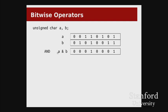The first bitwise operator is AND — single ampersand, not double ampersand. The resulting bit will be one if and only if both a and b have a one in that corresponding bit position. So here where both a and b have a one, the result will have a one. But in the other slots, even though a has a one, because b has a zero, the result will be zero.